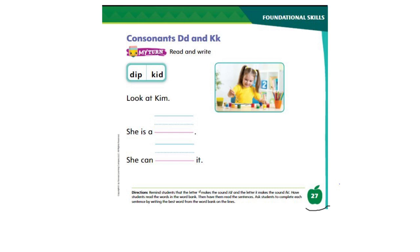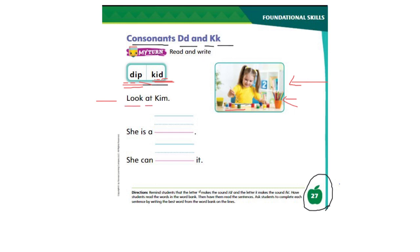Now let's take a look at page number 27, consonants D and K. First, we have to read these words: D-I-P — dip, K-I-D — kid. Here we have a picture of a kid who has some paint and paintbrushes. Let's read this sentence: Look at Kim. So this girl must be Kim.